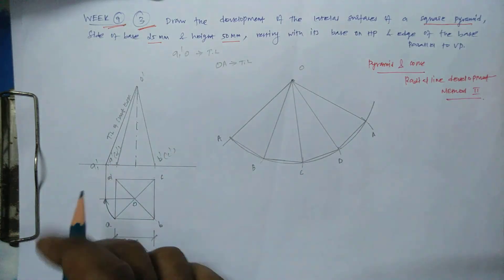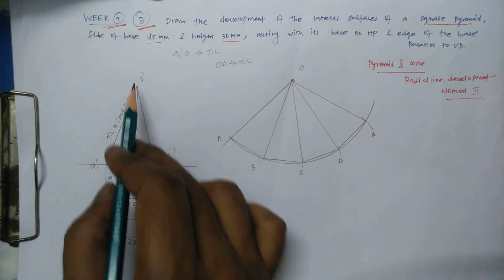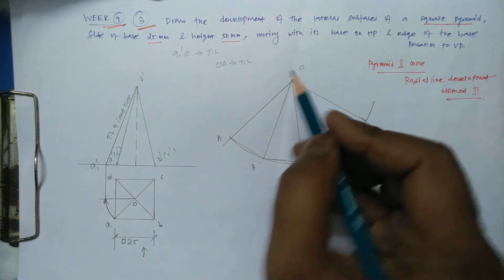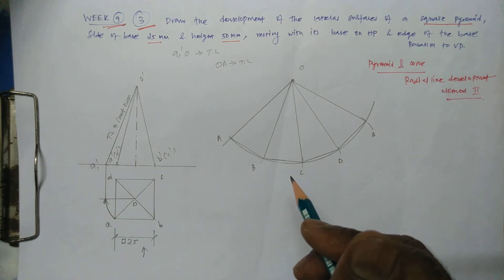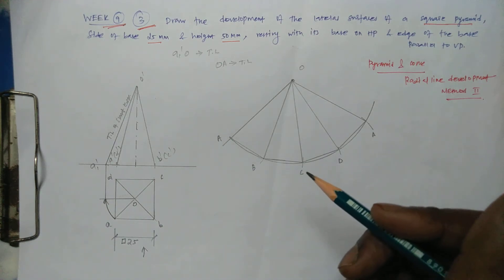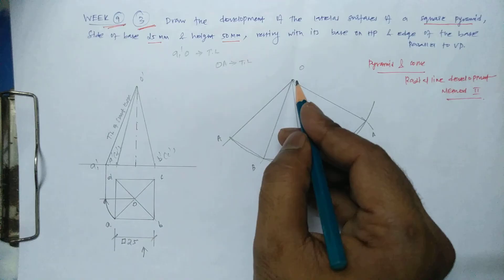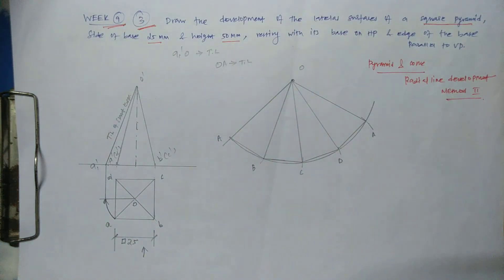So this portion is nothing but A dash, B dash, O dash, A, B, O. All are same. All are in the same dimension for the radial line development. The final figure is like this. In another manner also we can develop. That is not required. Fine. This is the final view of the development of the square pyramid. Thanks.